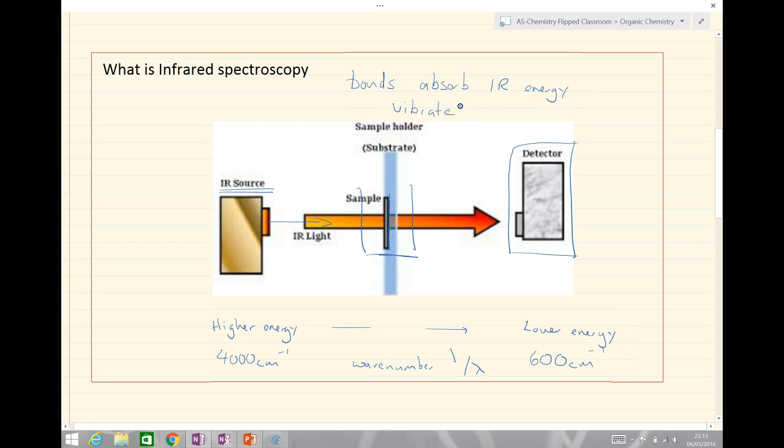The molecules absorb infrared energy because the bonds in the molecules absorb IR energy and this causes them to vibrate. That absorption is removed from our source, so certain wavelengths no longer reach the detector depending on the specific bonds in the molecule. This means we have a way of analyzing what bonds are in a molecule and therefore which functional groups are present.